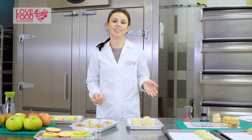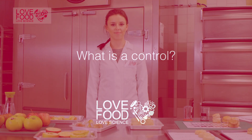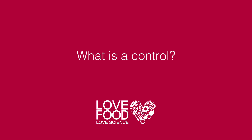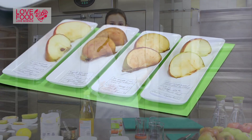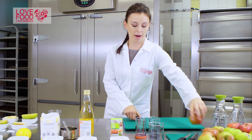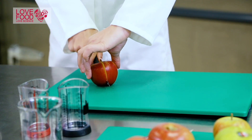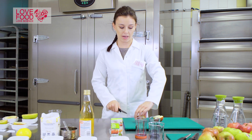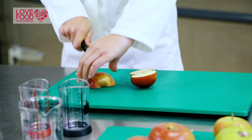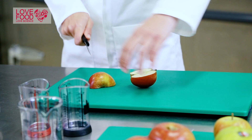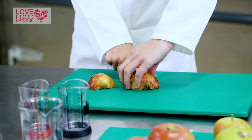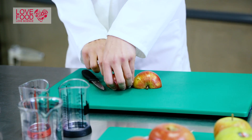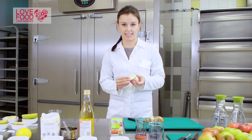In this video we'll be continuing the topic of conducting experiments. So what is a control? A control is a sample which has not been changed or altered in any way. It can then be used as a standard for other results to be compared against. For example, if I grab an apple and cut it into equal segments, the control is just this — it is the standard.